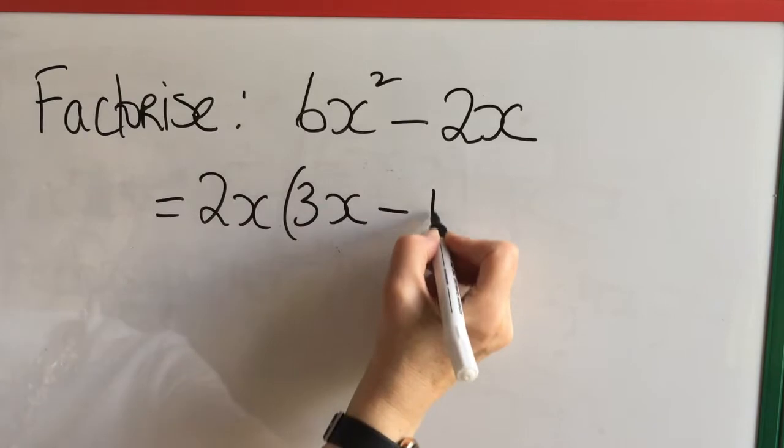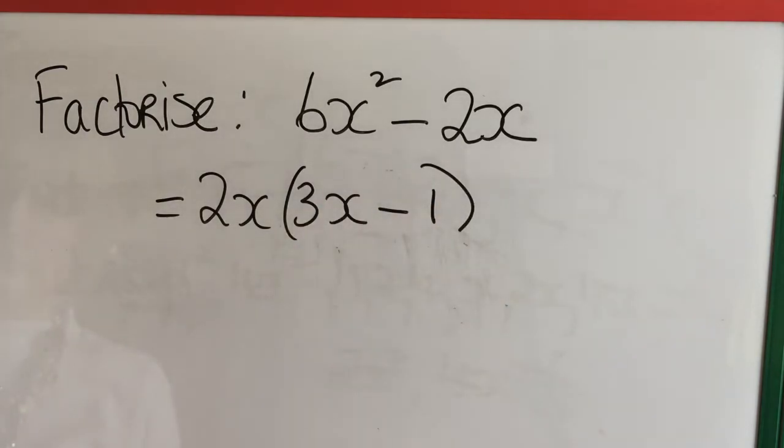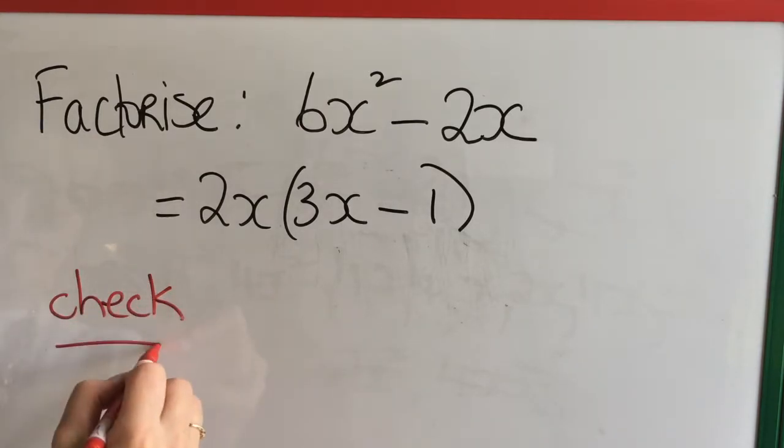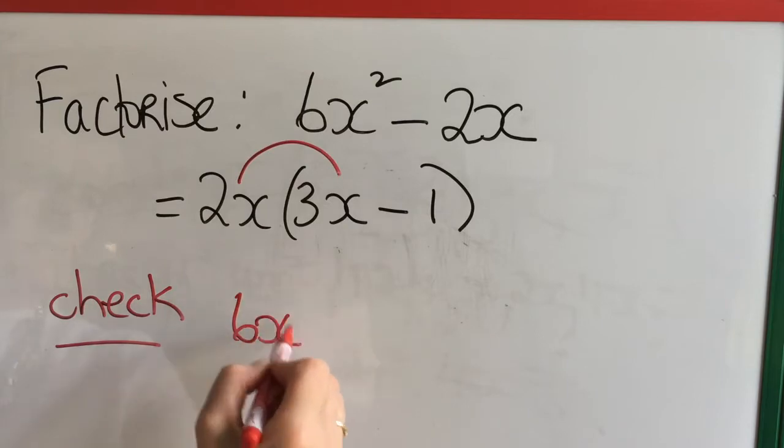So we're doing another one here. 2x is one factor. 3x minus 1 is the other factor and multiplying the two factors together we should get our original expression.